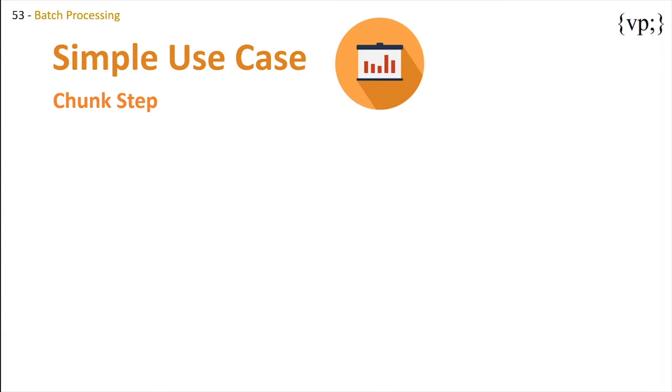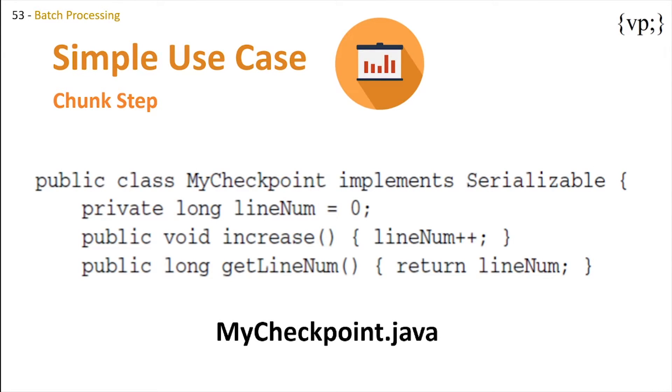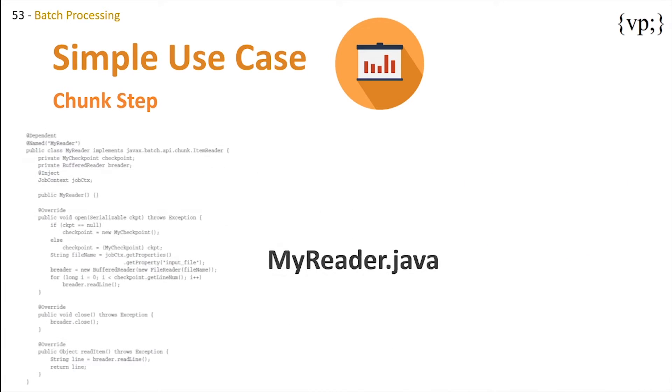This chunk step will be divided into four topics of interest: MyCheckpoint, MyReader, MyProcessor, and MyWriter. MyCheckpoint is just a class that keeps track of the line number in a text file in case we lose the connection to it. You remember checkpoints before? This is what it is in Java code.